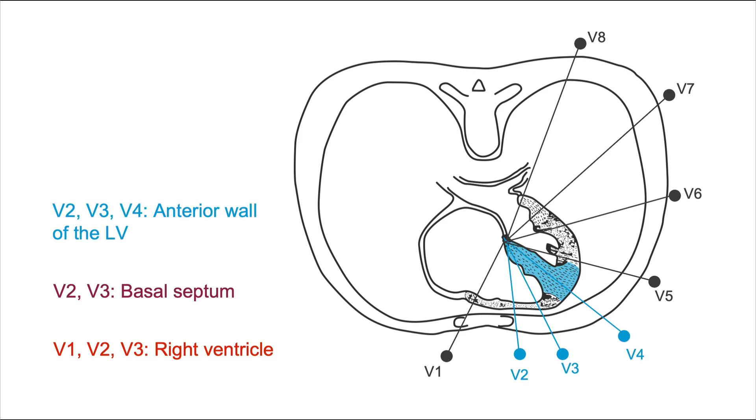So as we know, the left ventricle is located behind the right ventricle, but it also has an anterior wall, and this anterior wall is depicted by these three leads. What about V5 and V6? Those two leads show the lateral wall of the left ventricle. And what about V7 and V8? Well, they depict the posterior wall of the left ventricle.